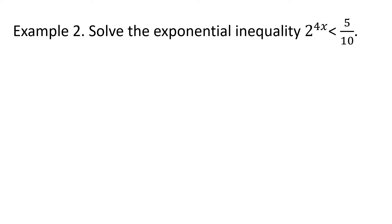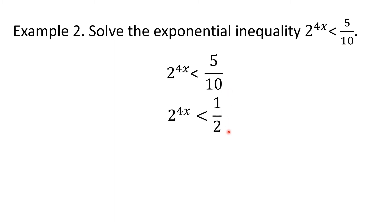Example 2. Solve the exponential inequality 2 to the 4x power is less than 5 over 10. We are going to solve for the unknown variable exponent. Again, to solve an exponential inequality, we must express both sides as terms with the same base. We know that 5 over 10 simplified is 1 half. Using the negative exponent rule, 1 half equals 2 to the negative 1. So we have 2 to the 4x is less than 2 to the negative 1.